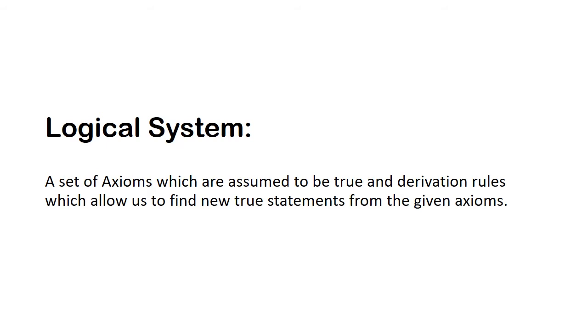Now in logic, a logical system is a set of axioms or facts which we have assumed to be true and a set of derivation rules which allow us to find new true statements from the given axioms. Every statement in a logical system does indeed need to have a truth value.